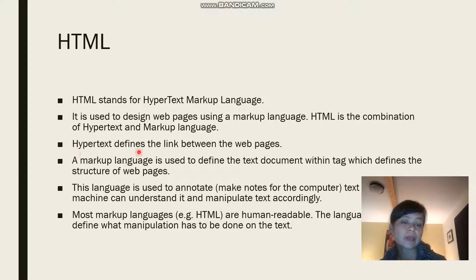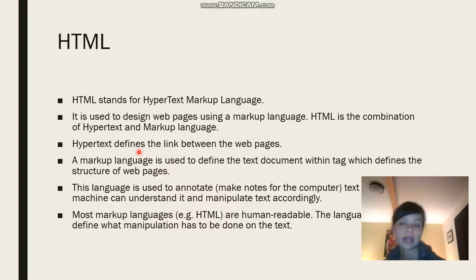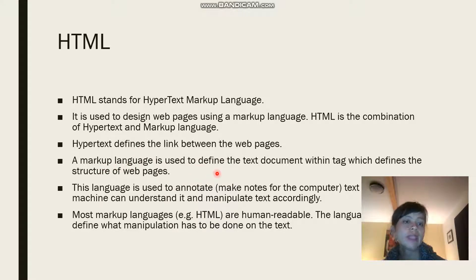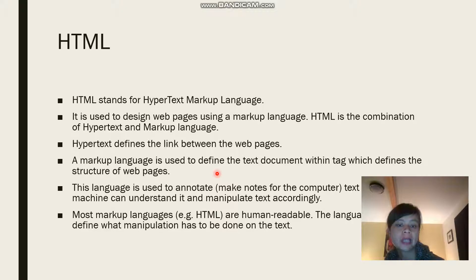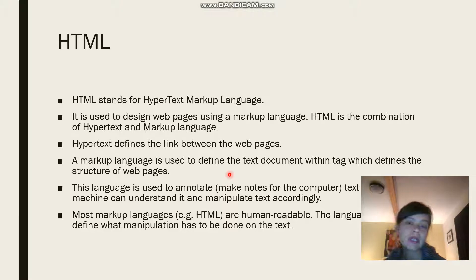Hypertext defines the link between web pages — on any web page you'll be able to link from one page to another. The markup language is used to define the text document within tags, and these tags define the structure of the web pages. This language is used to annotate — meaning make notes for the computer — in a way that machines can understand and manipulate the text accordingly.